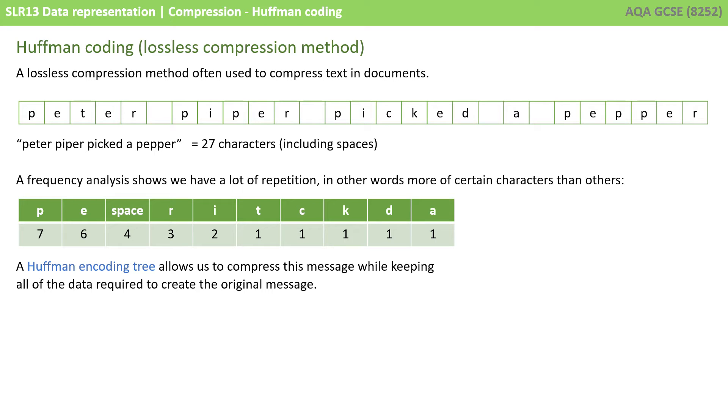A quick frequency analysis will show we've got quite a lot of repetition here. In other words, some of these characters are appearing a lot more than others. The letter P, for example, appears seven times, the letter E six times, whereas lots of them are appearing only once. A Huffman encoding tree allows us to compress this message while keeping all of the data required to recreate the original message.